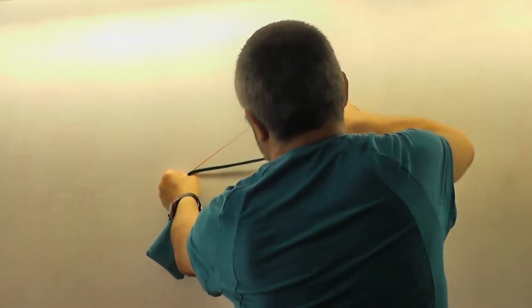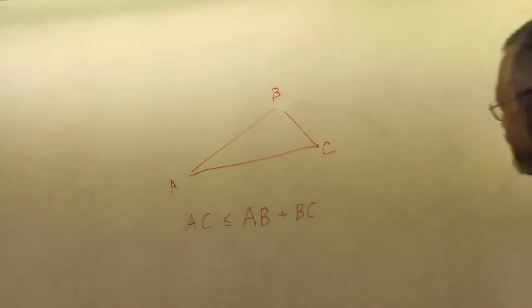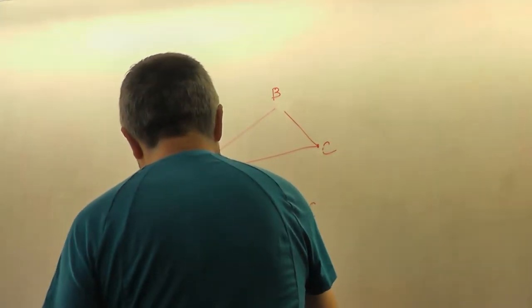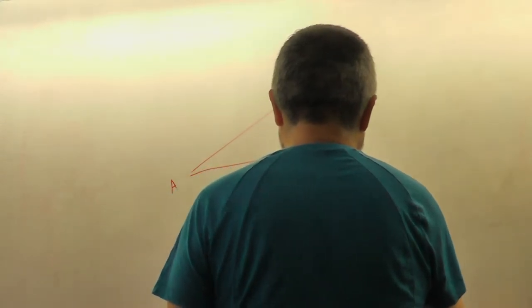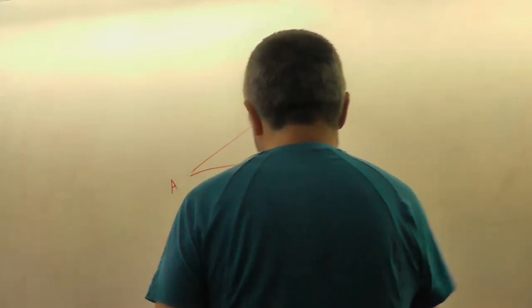But this is both Triangle Inequality, because this is a Triangle, or sometimes people say that line is the shortest path between two points.